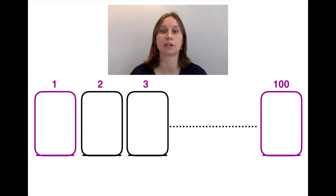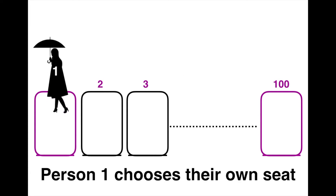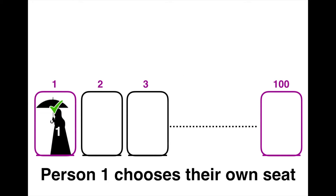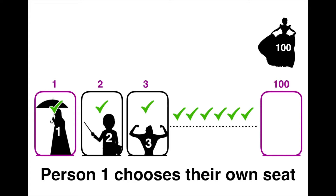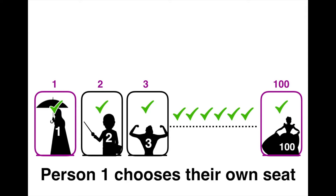The first outcome we're going to look at is the one where person one chooses their own seat. So there's person one sitting in their own seat — they're in the right seat. This means when person two gets onto the plane, their seat is free so they can sit in it. And the same thing happens for person three, and actually the same thing happens for all the passengers all the way up to 99. And even person 100 does get to sit in their own seat. This is quite a simple outcome.